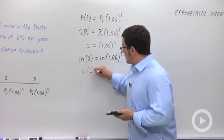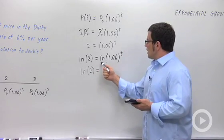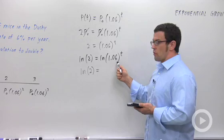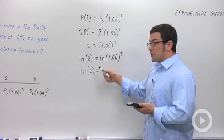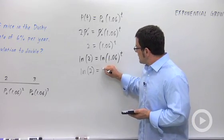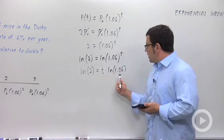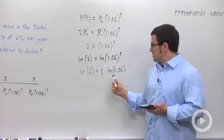Before I calculate, I actually need to use a property of logs. Natural log of 1.06 to the t. This is the log of a power. So the exponent can come out in front. t times ln of 1.06. And then we have a simple linear equation.